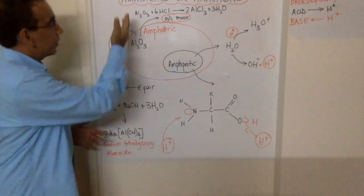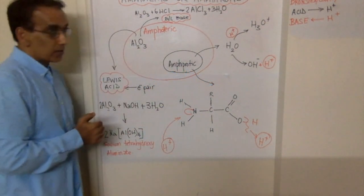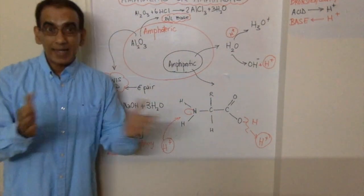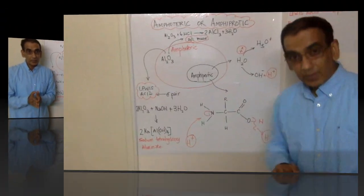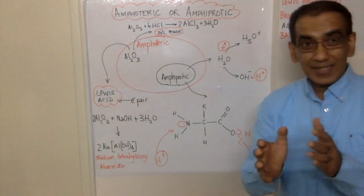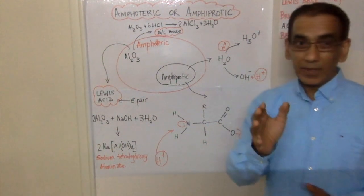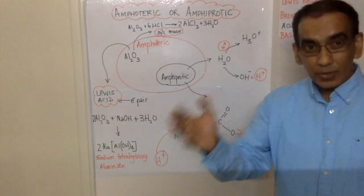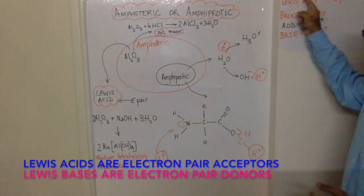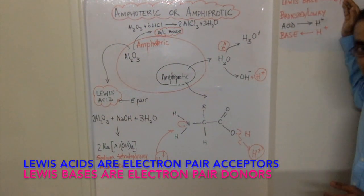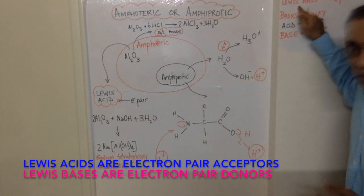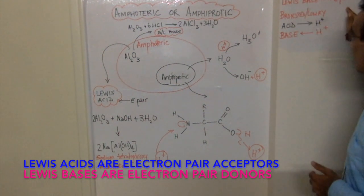An amphoteric substance is one that's able to behave both as an acid or as a base. Bear in mind that acids and bases are defined in two general ways: as Lewis acids, which are electron pair acceptors, and Lewis bases, which donate electron pairs.